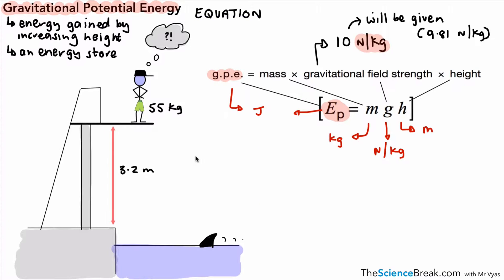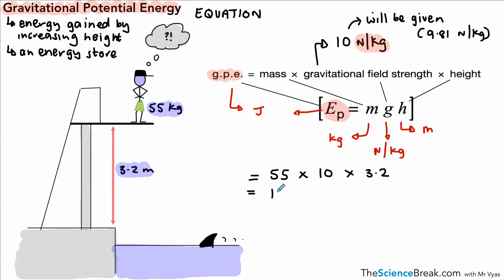Let's work through an example. We've got a person on a diving board above a swimming pool. The increase in height is 3.2 metres, mass is 55 kg, and we use G as 10. Putting the numbers into the equation: 55 times 10 times 3.2 gives us 1,760 joules, or 1.76 kilojoules.